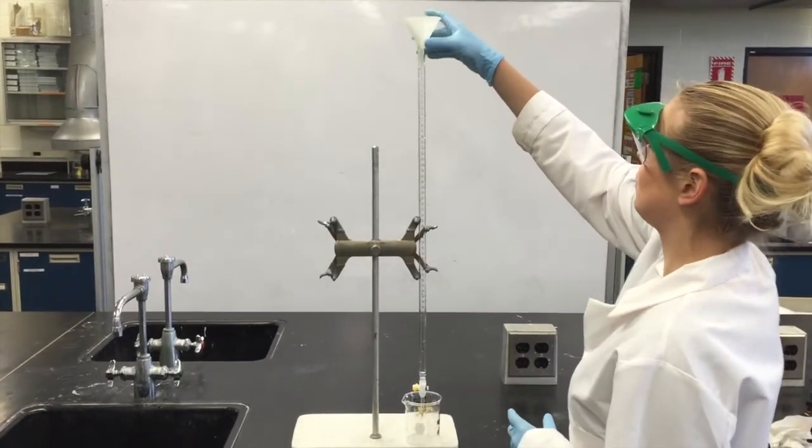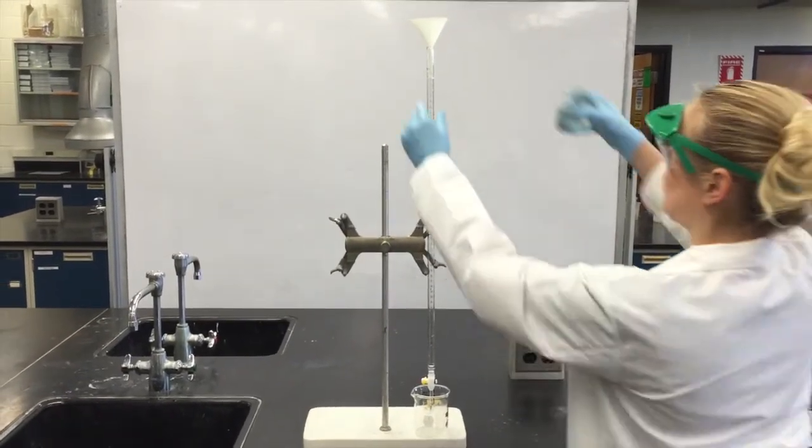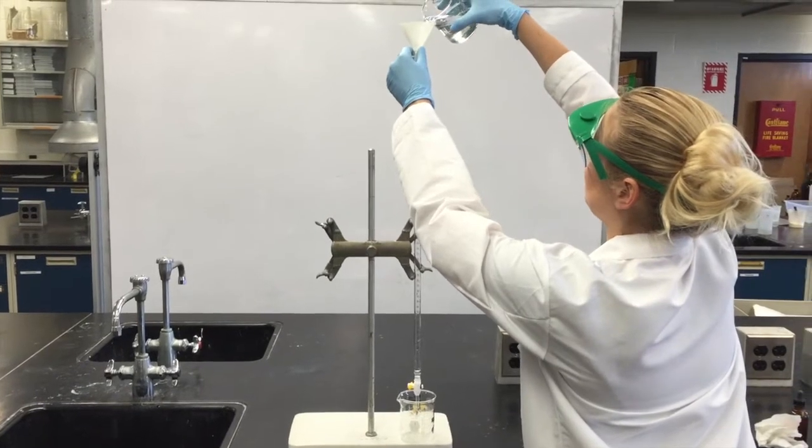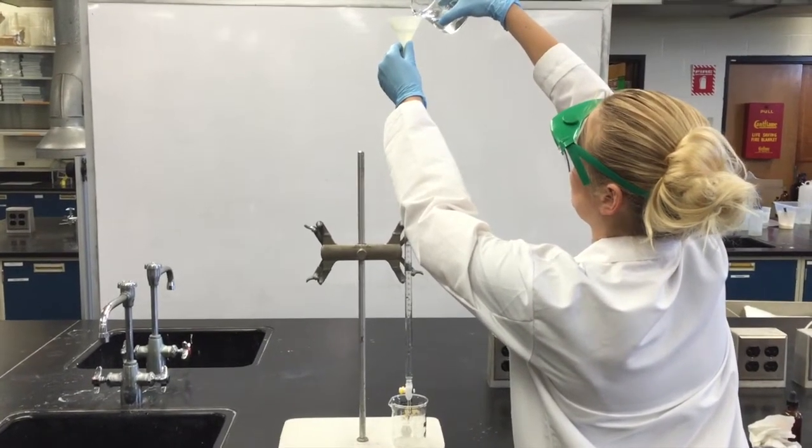Next, place a waste beaker beneath the burette and a funnel on top of the burette. Carefully pour sodium hydroxide solution through the funnel.